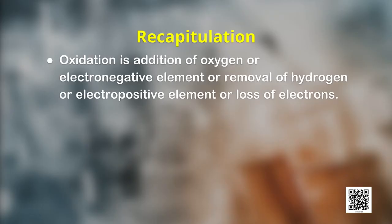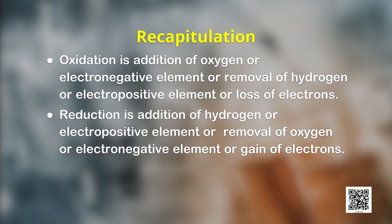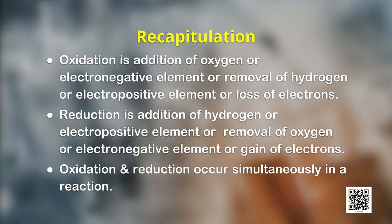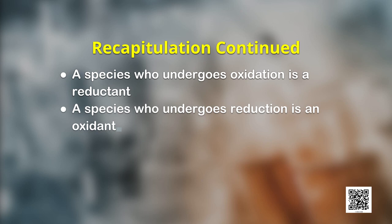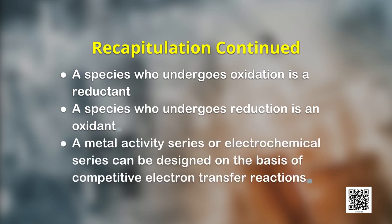We will study galvanic cells in upcoming episodes. To conclude: oxidation is addition of oxygen or electronegative element, or removal of hydrogen or electropositive element, or loss of electrons. Reduction is addition of hydrogen or electropositive element, or removal of oxygen or electronegative element, or gain of electrons. Oxidation and reduction occur simultaneously in a reaction. A species which undergoes oxidation is a reductant, and a species which undergoes reduction is an oxidant. A metal activity series or electrochemical series can be designed on the basis of competitive electron transfer reactions.